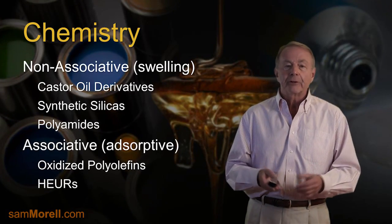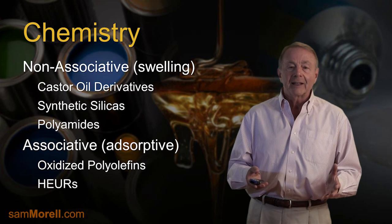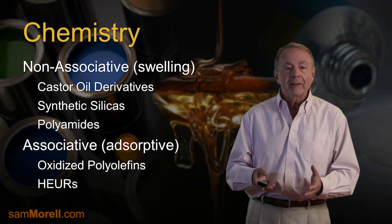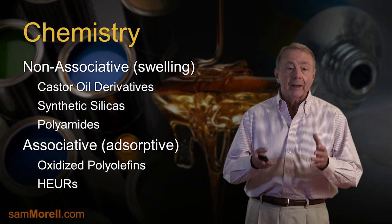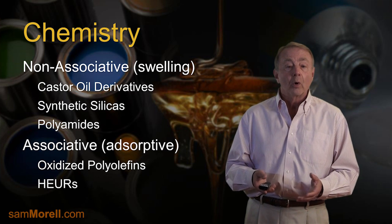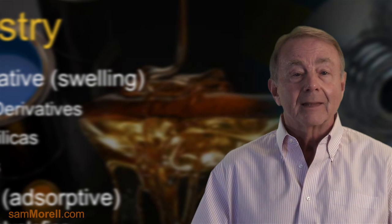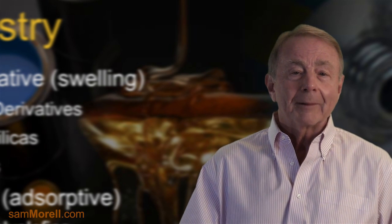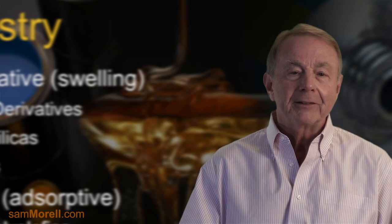I hope this tutorial gives you a better appreciation of how some rheological agents work. An understanding of chemistry and mechanism allows a formulating chemist to select the most appropriate raw material for a specific formulation or system — whether it's waterborne or solvent-borne, whether the solvent is polar or non-polar, or whether the end product is clear or pigmented. In our next and final tutorial, we'll examine how rheology is measured using the latest equipment, methods, and techniques.